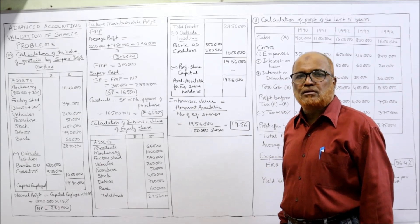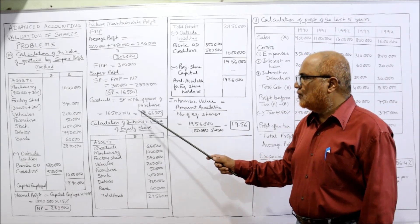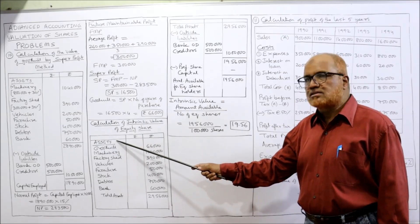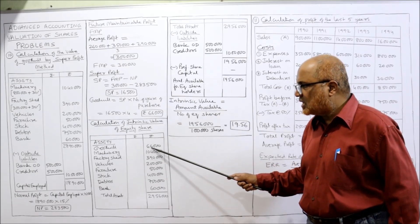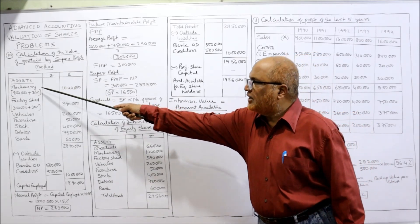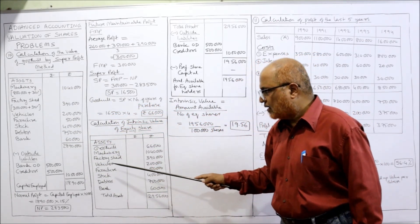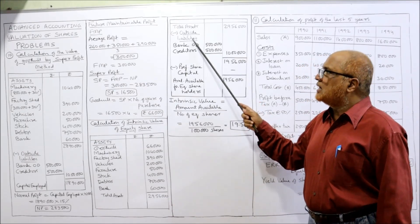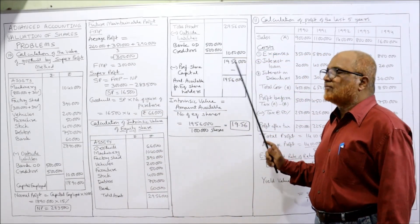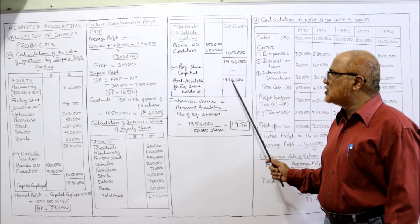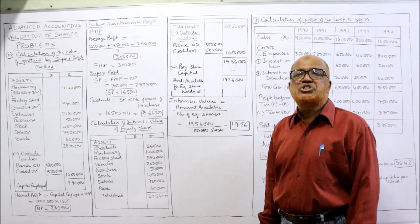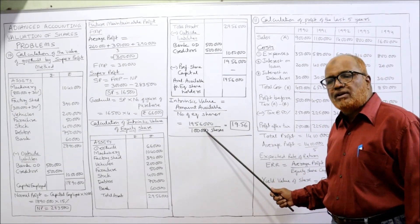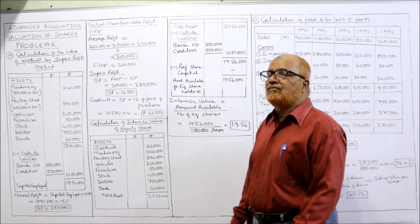Goodwill = super profit × number of years of purchase. Four years' purchase is given in the problem, so goodwill = 16,500 × 4 = ₹66,000. Now we calculate intrinsic value. Assets: goodwill 66,000 plus all other assets — machinery, factory shed, vehicle, furniture, stock, debtors, bank — total assets = 29 lakh 56 thousand. Deduct outside liabilities (bank overdraft and creditors = 10 lakh). No preference share capital. Net worth available for equity shareholders = 19 lakh 56 thousand. Intrinsic value = 19,56,000 ÷ 1,00,000 shares = ₹19.56 per share.